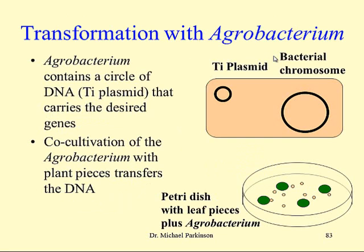For transformation with agrobacterium, the agrobacterium contains a bacterial chromosome, but for our purposes it also contains a circle of DNA external to that — the Ti plasmid — that carries the desired genes and genes that promote the transformation process. Transformation with agrobacterium is achieved through co-cultivation of the agrobacterium with plant pieces, and this results in transfer of the DNA into the plants.